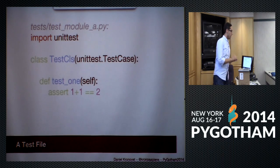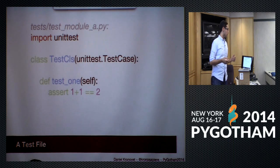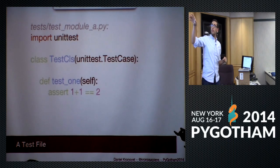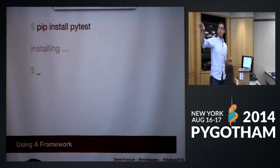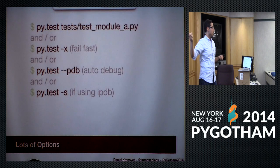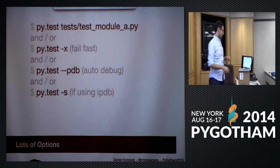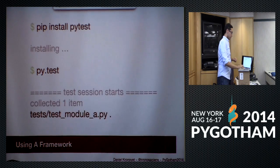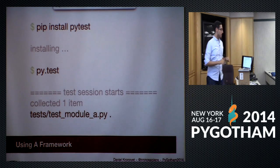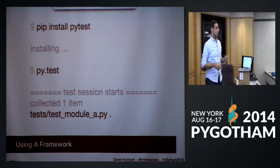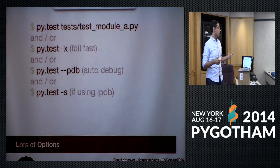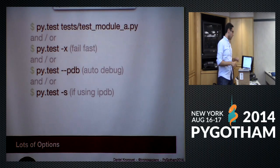Testing. The structure of a test file using the unittest framework: you import unittest, create a class that inherits from TestCase, define a test, and make an assertion. If the assertion is true, the test passes; if false, it fails. I like using the pytest framework over unittest because it has a number of features that are nicer, and it works basically the same in most cases.